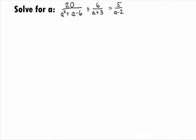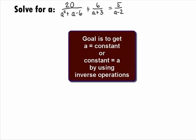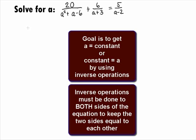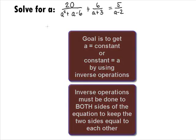In this example, we want to solve the equation 20 over a squared plus a minus 6 plus 6 over a plus 3 equals 5 over a minus 2 for a. The goal here is to get a by itself on one side and everything else on the other using inverse operations. When we do the inverse operations, we want to make sure that we do the same thing to both sides in order to keep the two sides of the equation equal to each other.